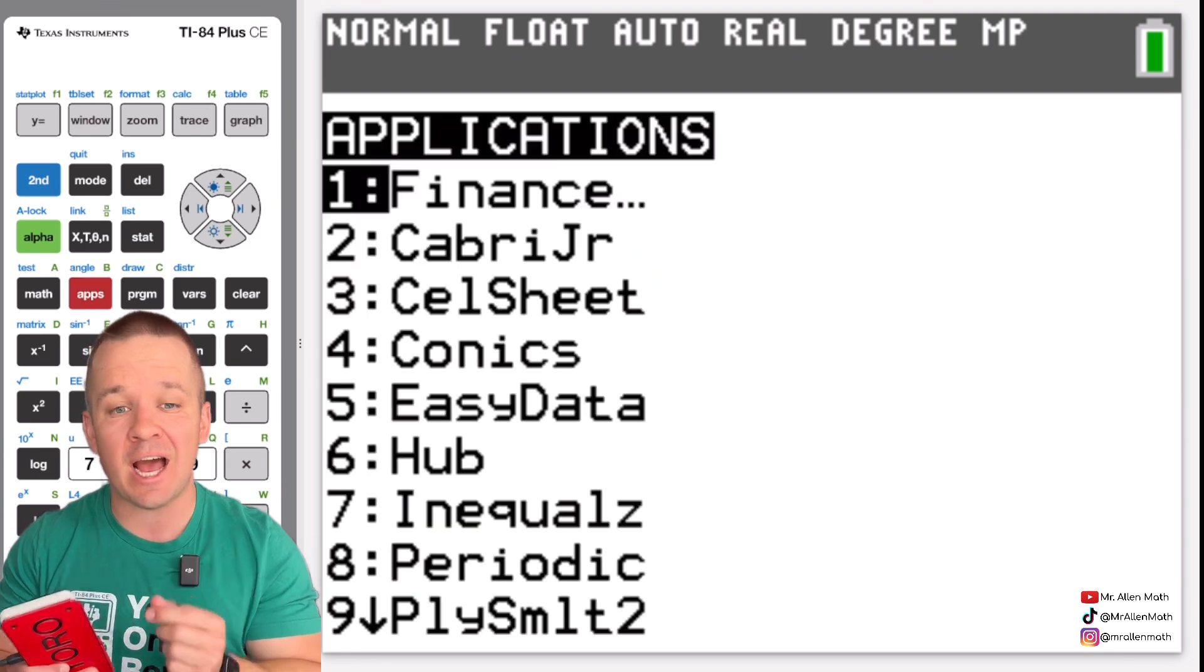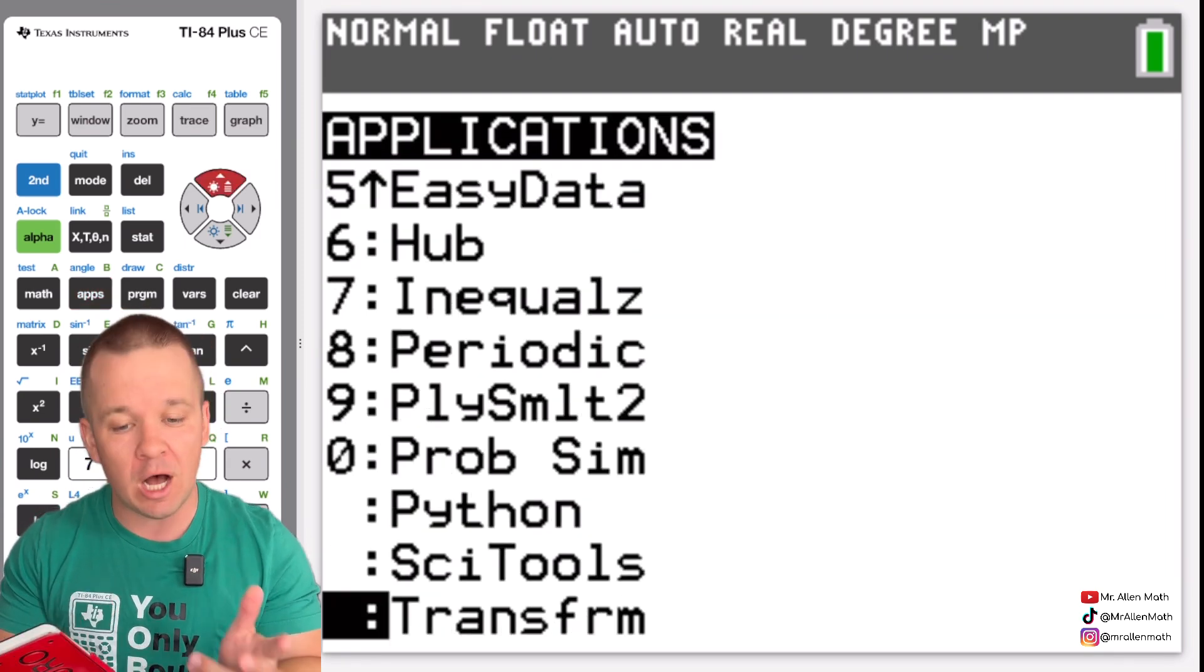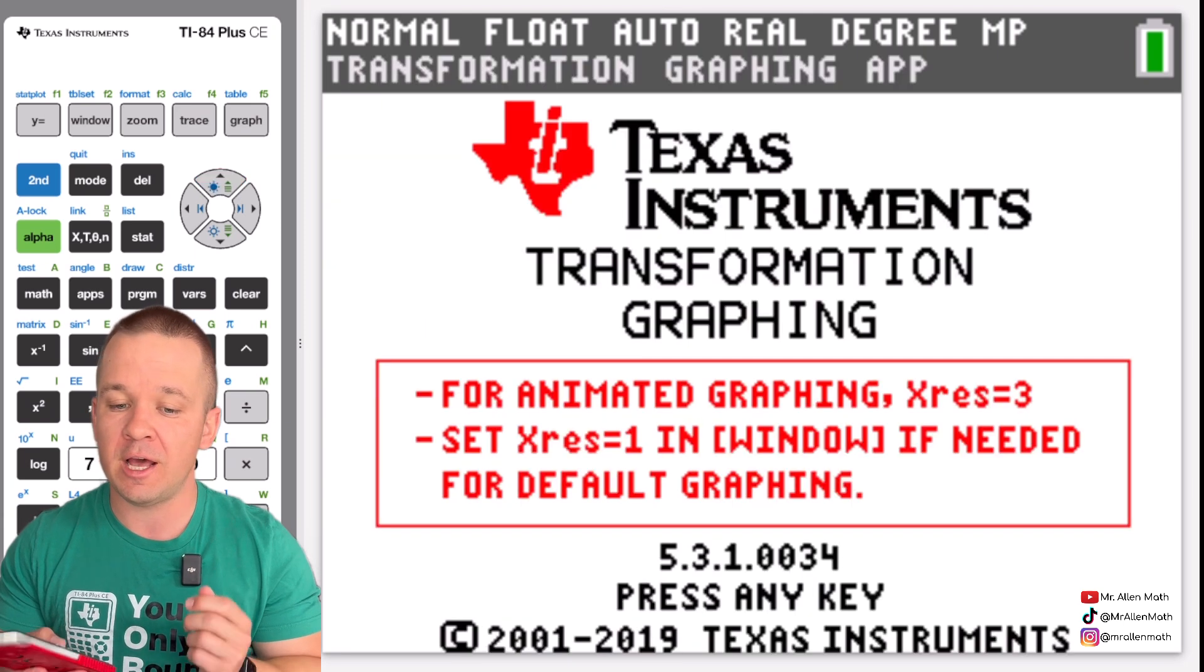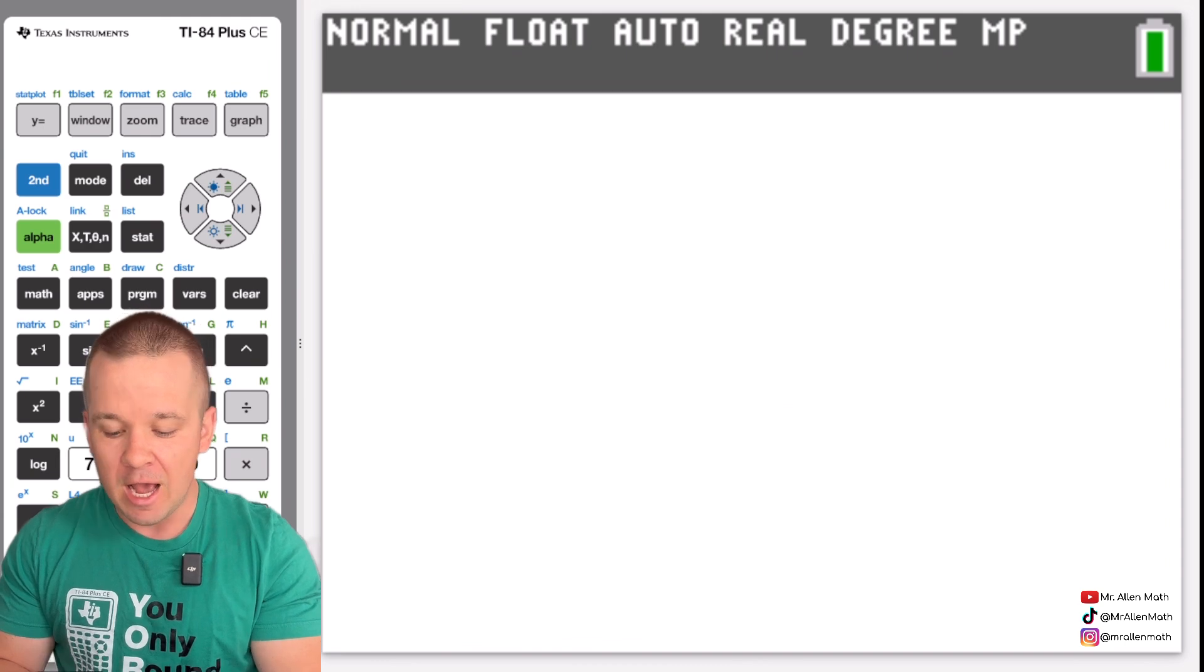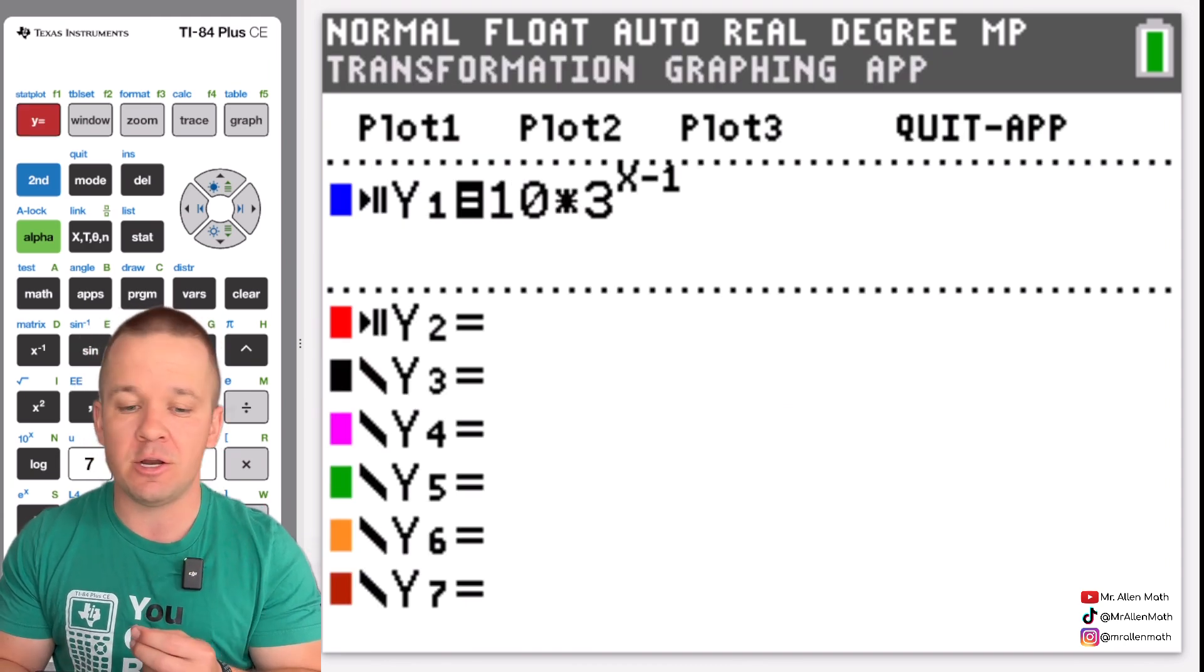So the first thing we're going to do here is hit the apps button on our calculator and it's the last option. So I'm just going to arrow up and there it is, transformed. So we hit enter on that. You're going to hit enter a second time after it runs you through the little menu of settings there. And then I'm going to hit Y equals and that's where you're going to notice something a little bit different in your calculator.